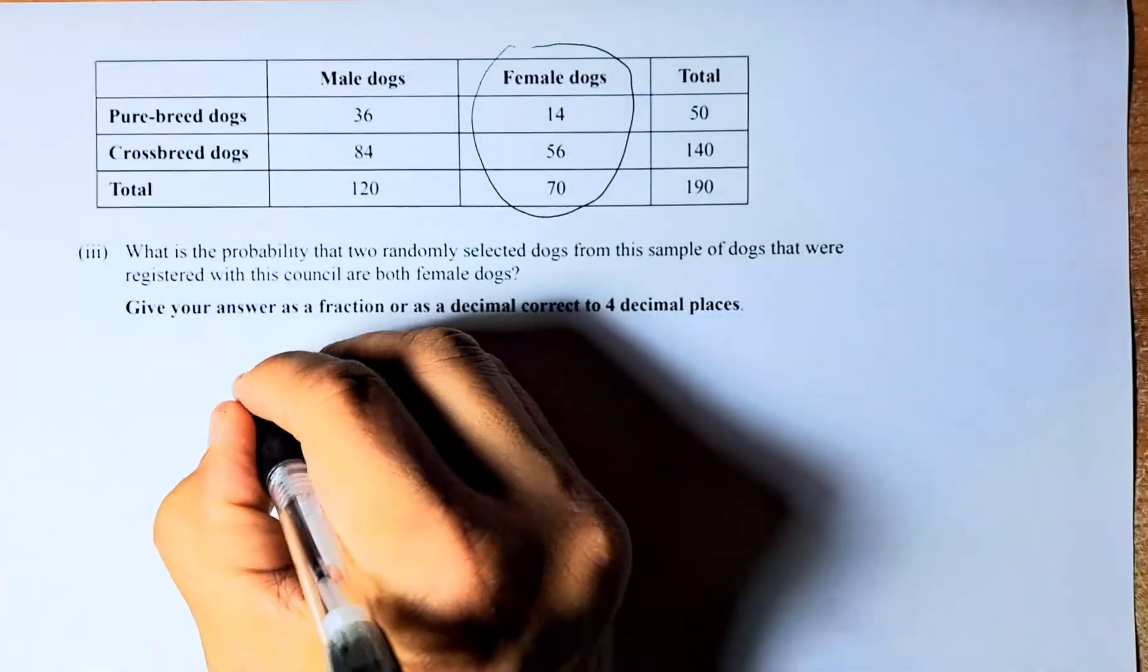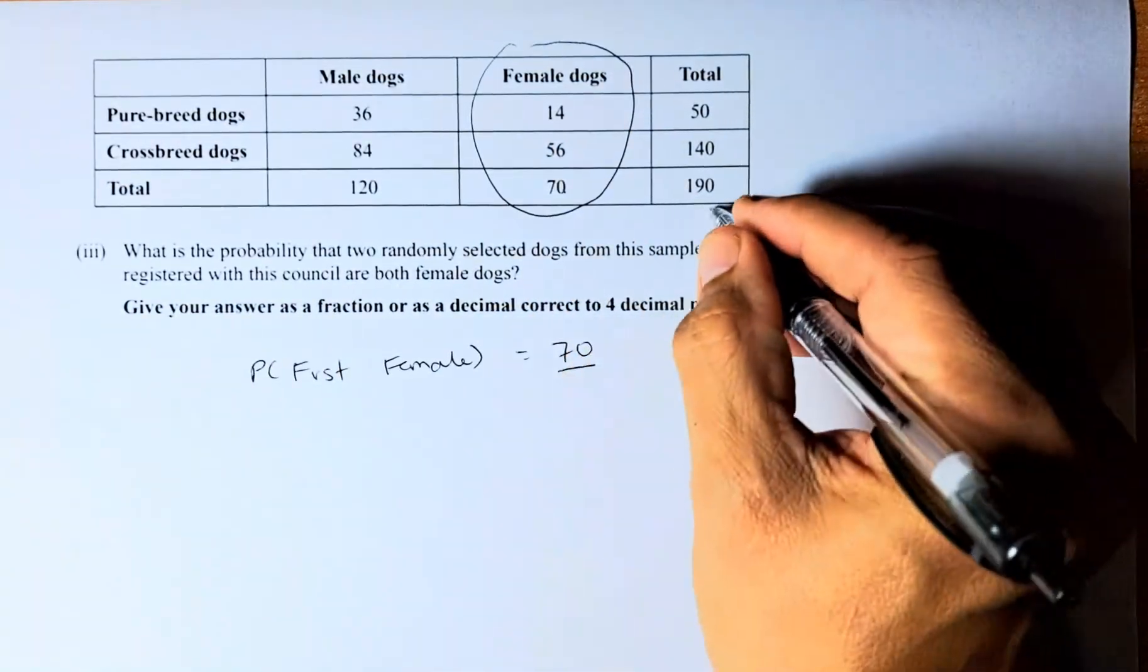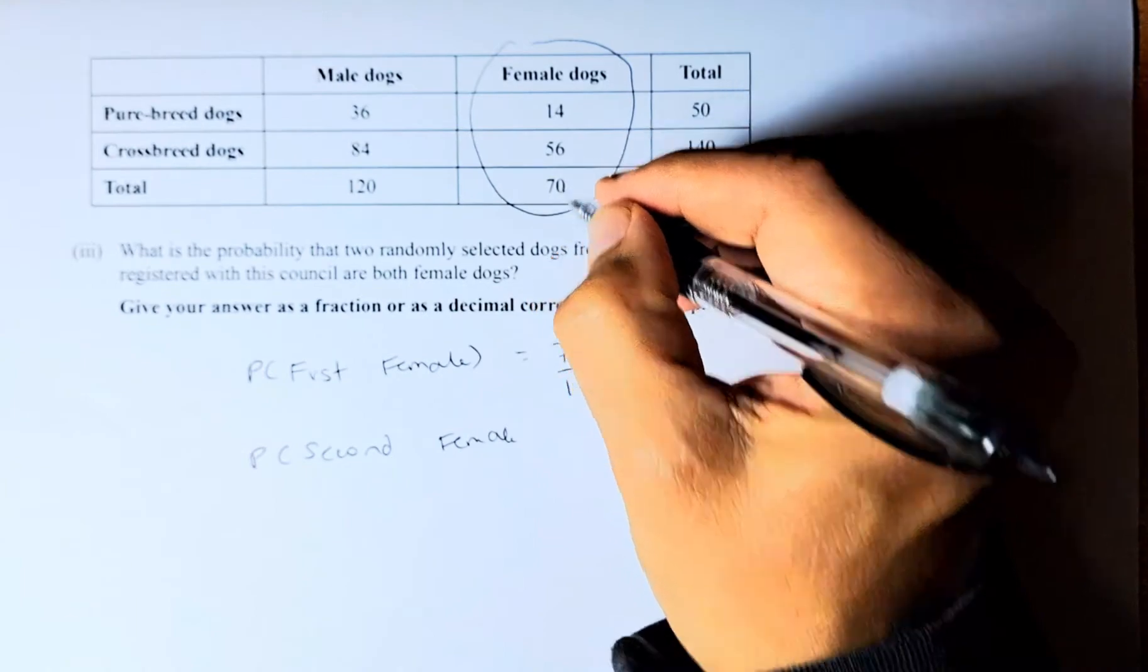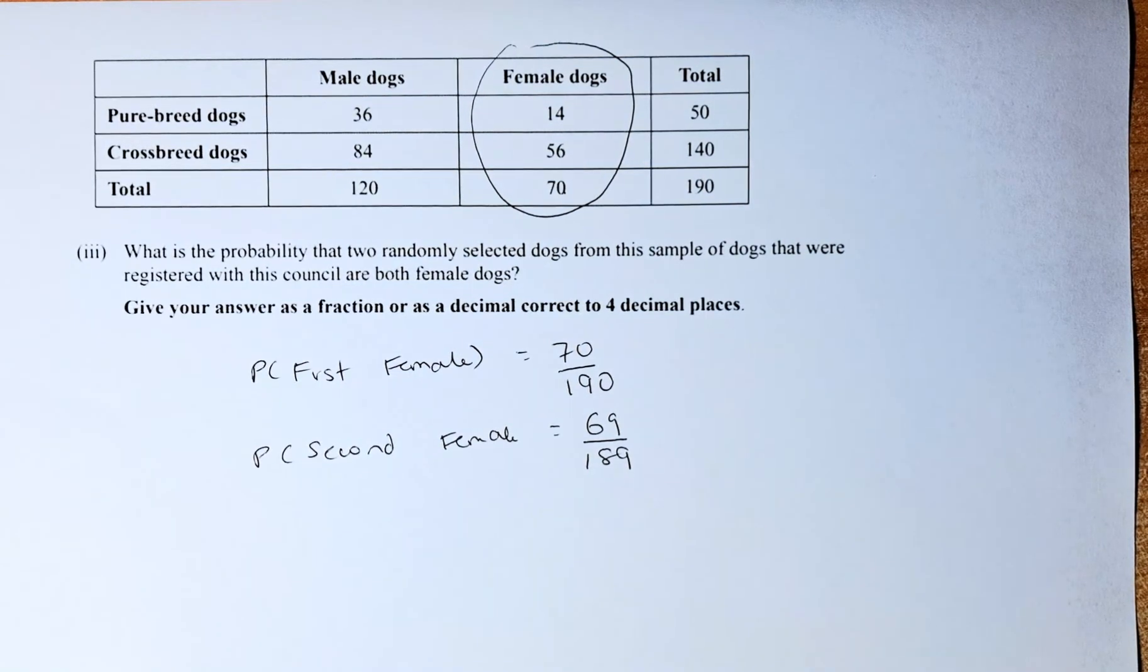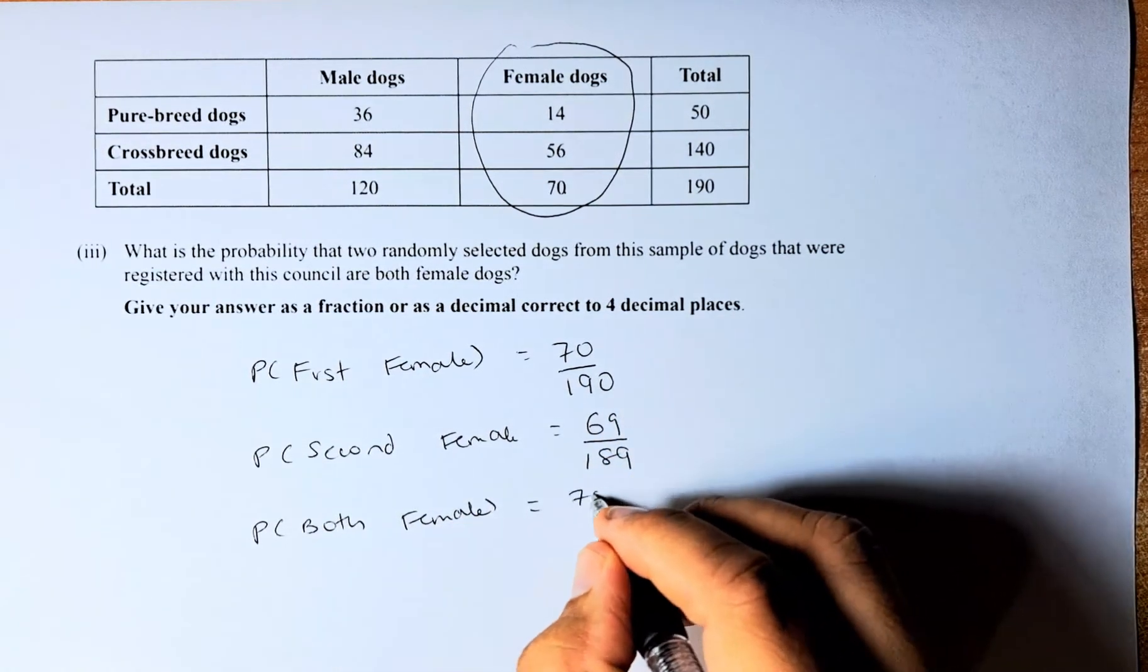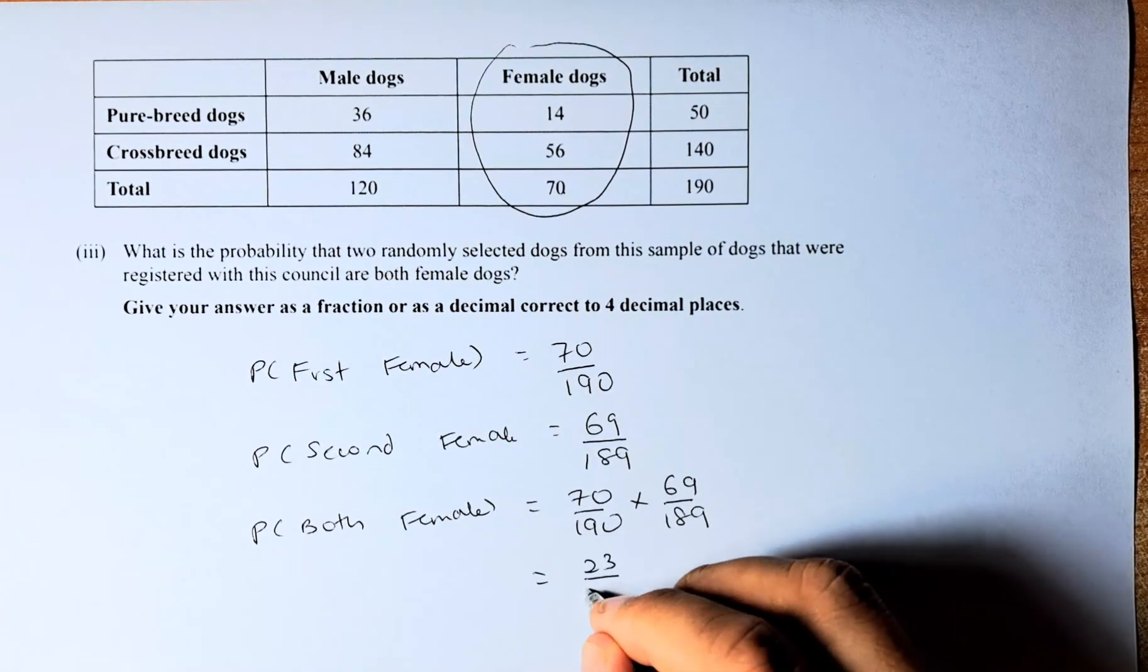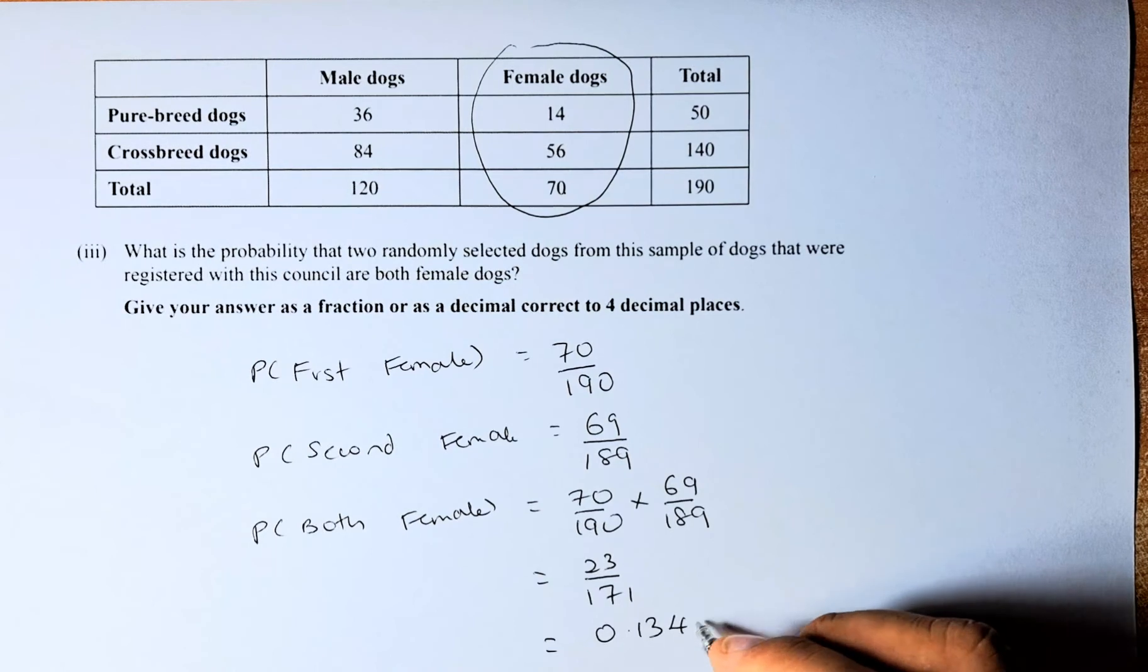So the first female, probability of first female, is going to be 70 out of 190. Now, to get the second female, probability of second female. If the first one is the female, the number has reduced by 1, so it's going to be 69. And the total also reduced by 1 is 189. So what is the probability that both are female? We just need to multiply the two probabilities together. 70 over 190 multiplied by 69 over 189. Put in your calculator, and the answer is going to be 23 out of 171. Or if you prefer in decimal, the answer is going to be 0.1345. And that is the merit.